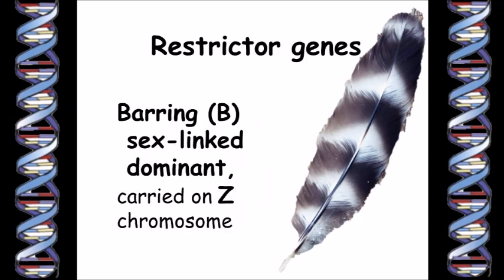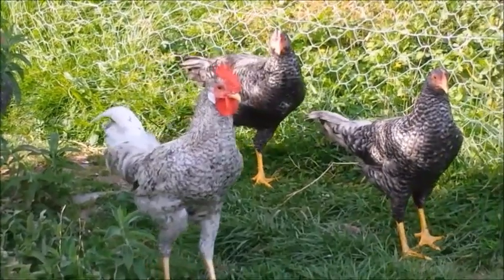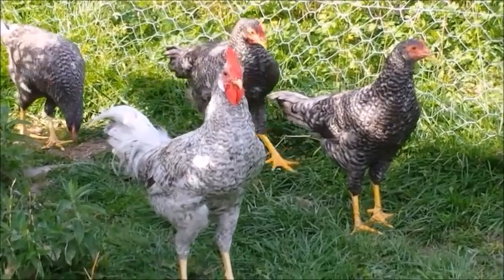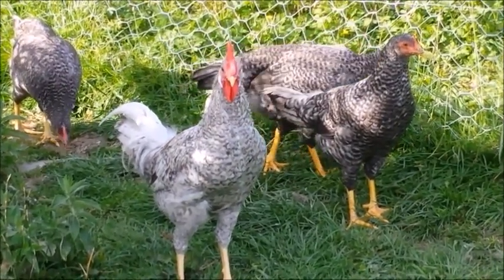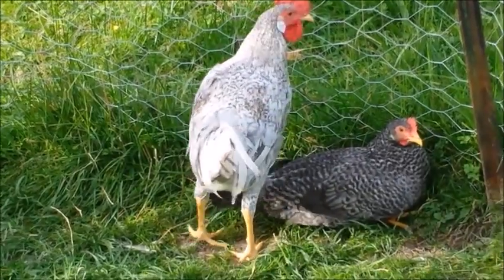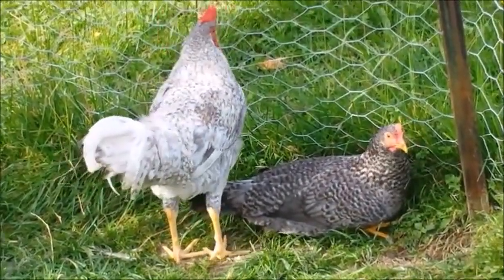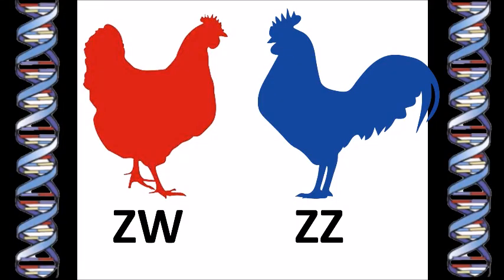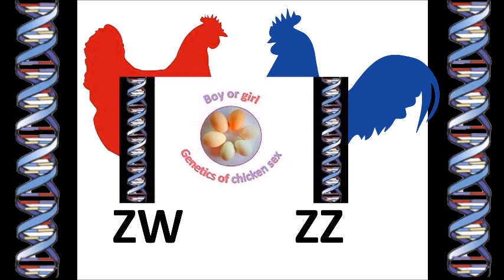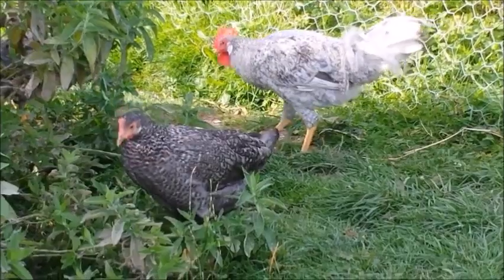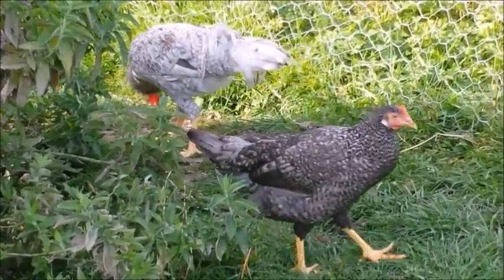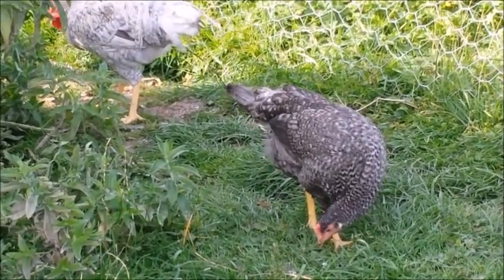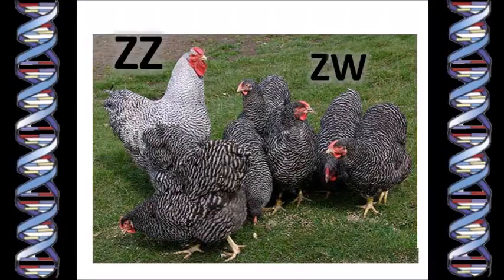The barring gene is particularly interesting because it's carried on the Z sex chromosome. Homozygous males have two copies of the barred gene and so look lighter than the barred females. Of course females can only have one copy of the barred gene because they only have one Z chromosome. When you know that the barring gene is a restrictor gene that turns off the depositing of eumelanin, you understand that two copies of it lead to more white on the feathers of the roosters.